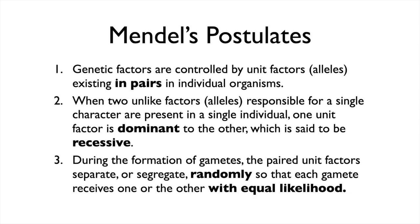Mendel's postulates: the first important one is everything is in pairs. There are pairs of unit factors that somehow — Mendel had no idea how — specify the phenotype of the organism, what it looks like. The other thing is he could characterize these unit factors as either dominant or recessive. So if you had a pair of them, one of them was dominant, and that's the only one you'd see. The recessive one would be in hiding.